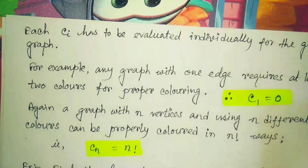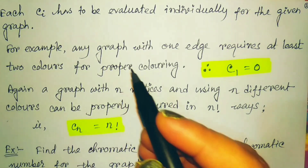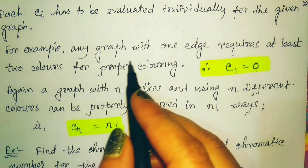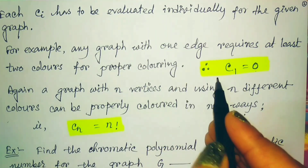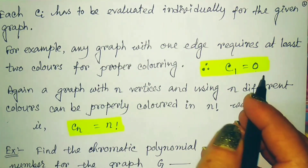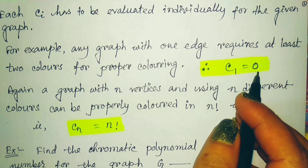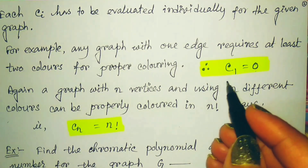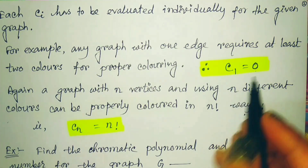Each C_i has to be evaluated individually for the given graph. For example, any graph with one edge requires at least two colors for proper coloring. Therefore, C1 should be 0. If two vertices are given with one edge, then these two vertices are adjacent to each other and require a minimum of two colors. With only one color, there is no option to color such a graph, so C1 = 0.